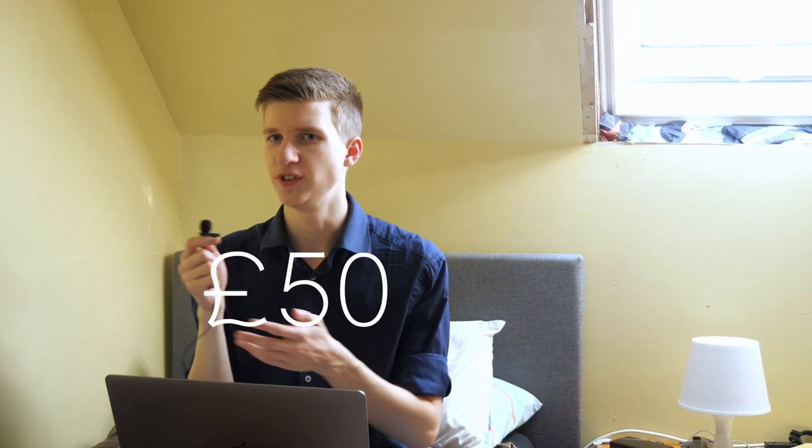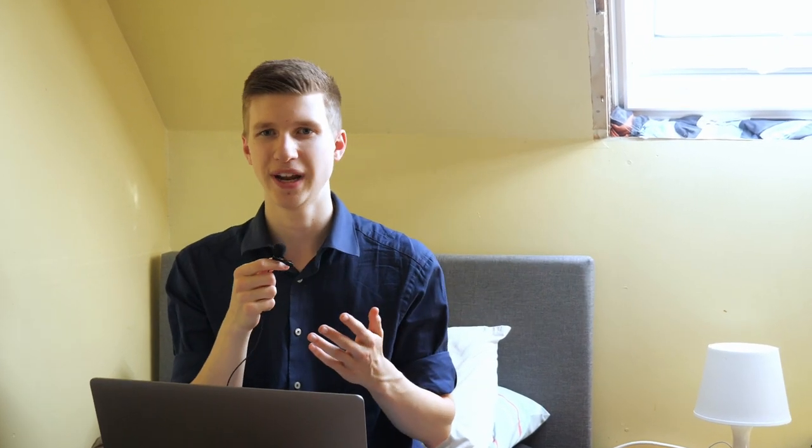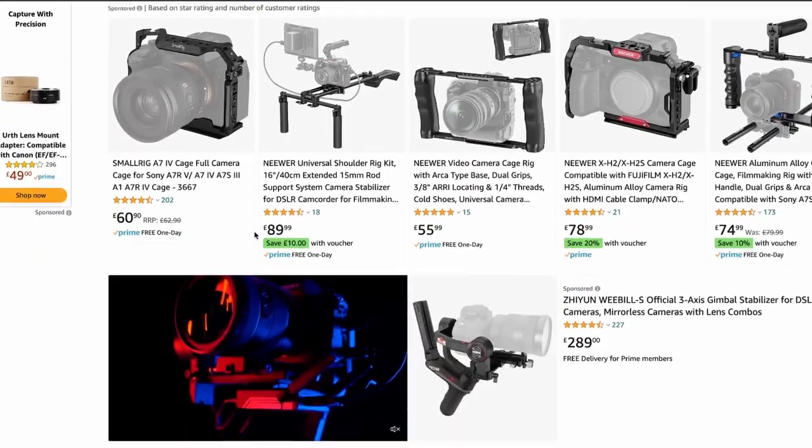Firstly, if you don't mind paying upwards of £50 to £100 for a camera cage made out of aluminum, it might just be best to double check the internet just to ensure that the camera cage that you're looking for doesn't already exist. Once you've concluded that it doesn't,